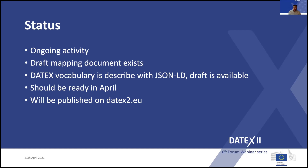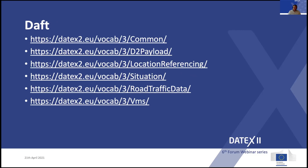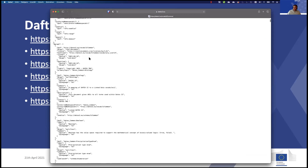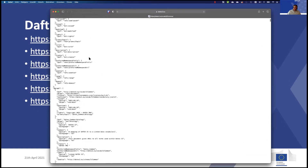The plan is that the final version should be ready in April. Since we are now the 21st of April, there are not many days left, but there is a review ongoing this week by experts from the open data community. I think and hope this will be published by end of April at datex2.eu. Already today, drafts of the JSON-LD documents are published on the DATEX website URLs, so if you look there you can access the JSON-LD draft documents.